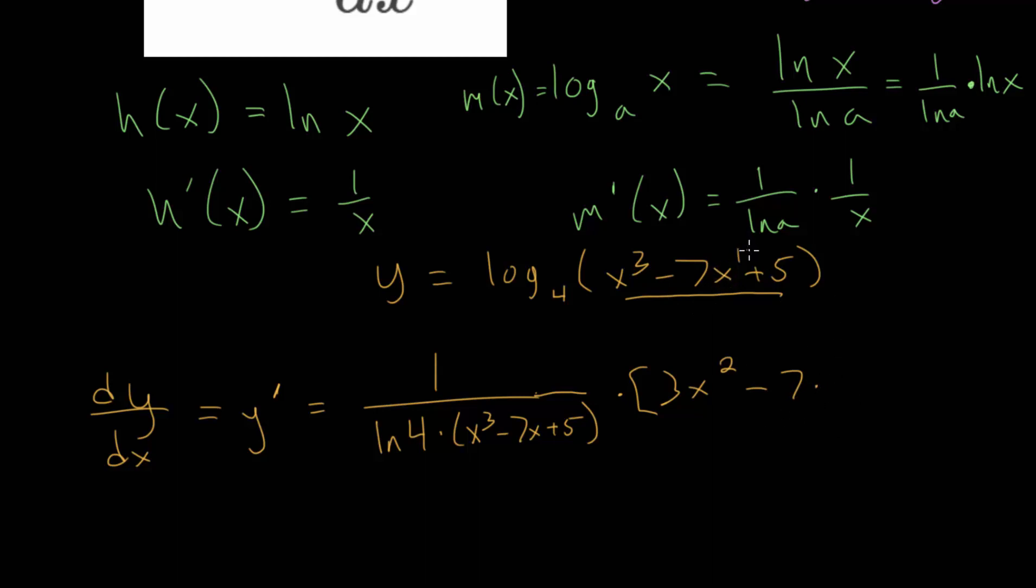And then multiplied by x to the 0 power, which is just 1. So we can just leave this as minus 7. And then we have the derivative of this constant, but the rate of change of a constant is 0. So the derivative of this 5 here is 0.